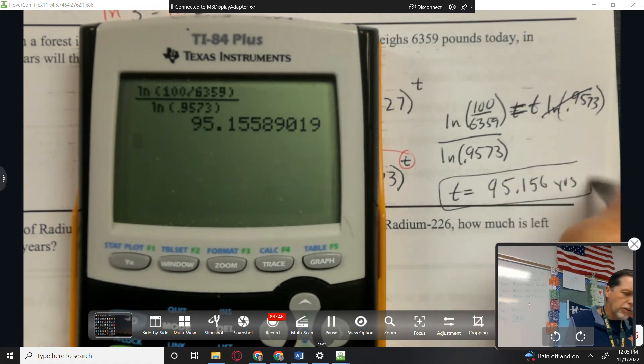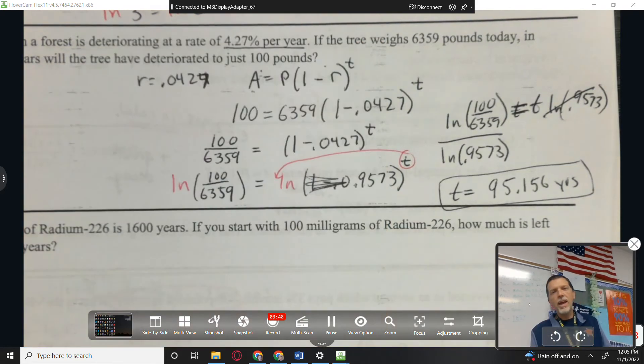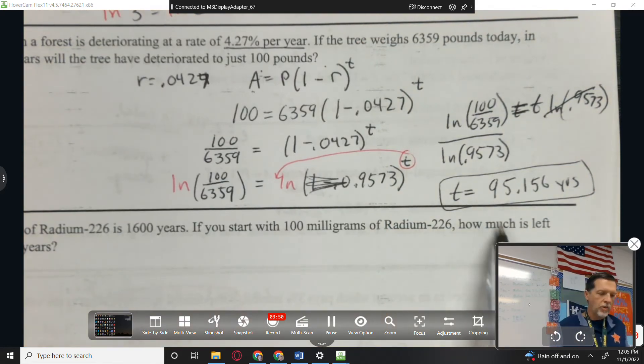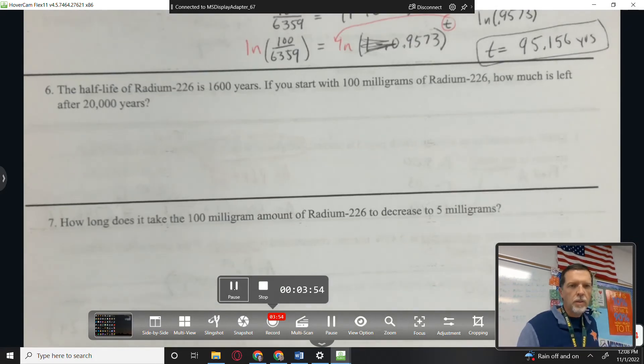95.156 years. Nearly 100 years. But again, we're decaying just a little bit per year, so I think that seems like a reasonable answer. Alright, number 6.